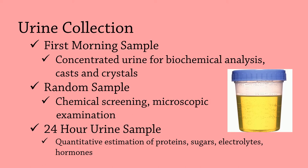Urine samples collected over a 24-hour period are used for a variety of tests, such as those designed to screen and diagnose metabolic or kidney disorders. The 24-hour urine sample can also be used for quantitative estimation of proteins, sugars, electrolytes, and hormones.